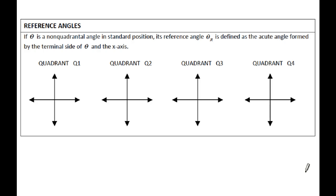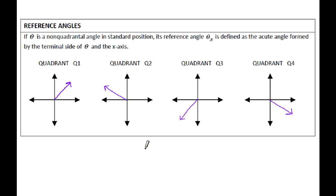The last thing we're looking at are reference angles. A reference angle is an acute angle — less than 90 degrees — with the terminal side of your angle along the x-axis. I'm going to draw an angle in each quadrant: one in the first quadrant, second quadrant, third quadrant, and fourth quadrant. This going around is theta in each respective quadrant.